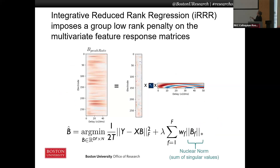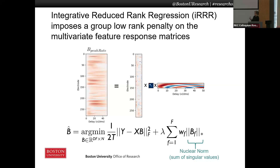Each feature will have a matrix like this, where each row shows a single electrode's response to that feature. This is a peak rate feature. The trick we're going to use here is to assume that this is a low-rank matrix — so it can be represented as patterns across electrodes and patterns across time, much like in a PCA.